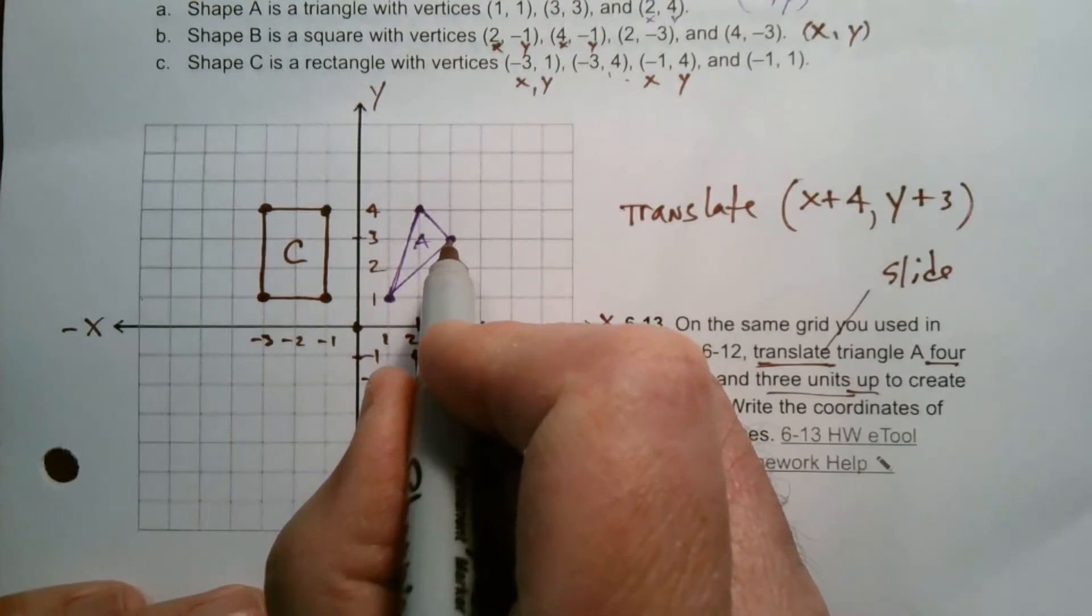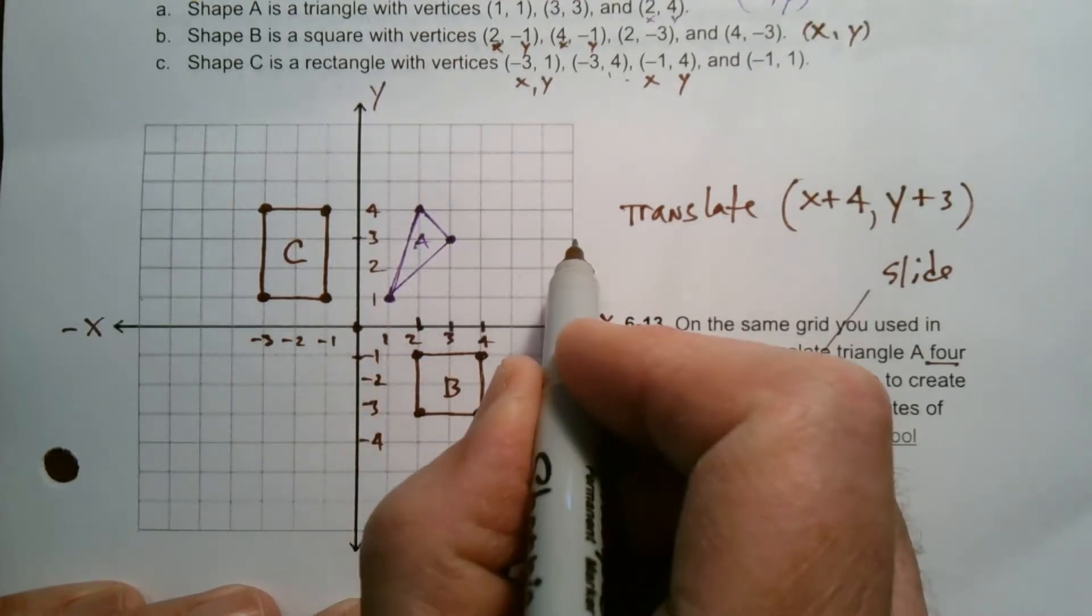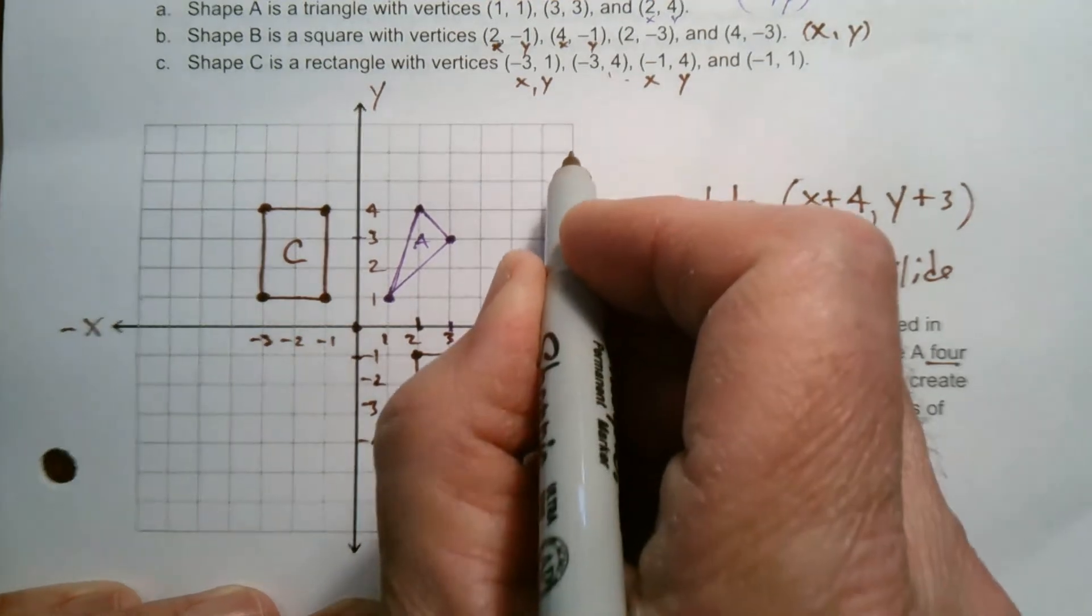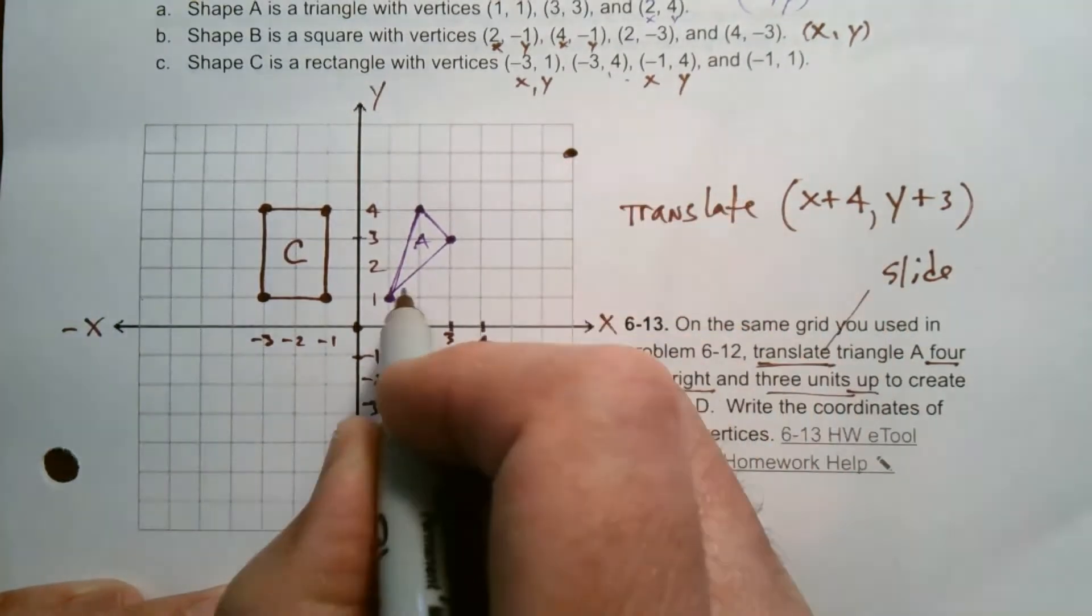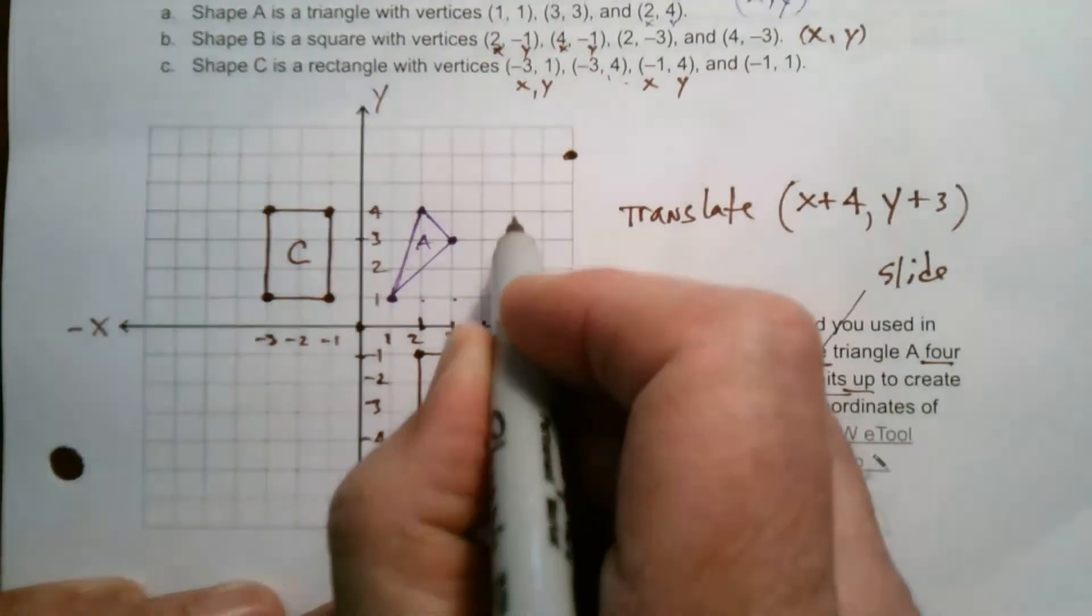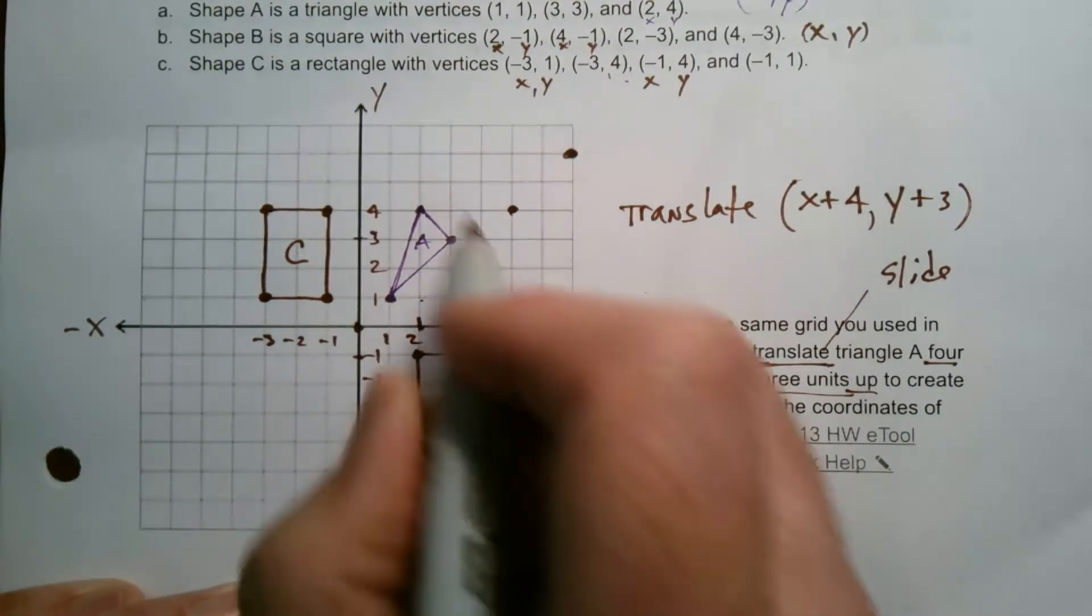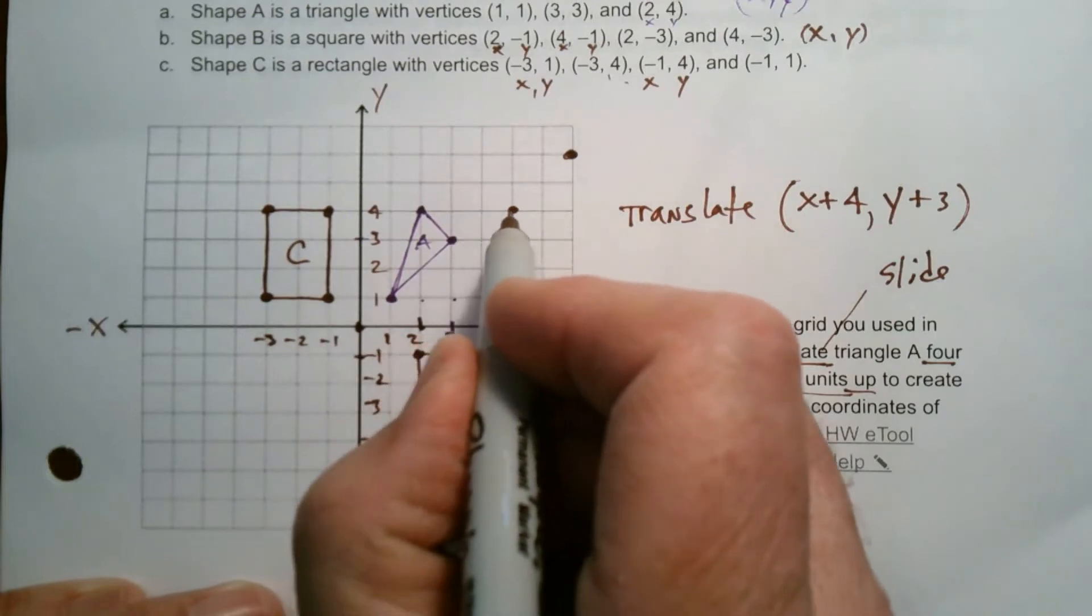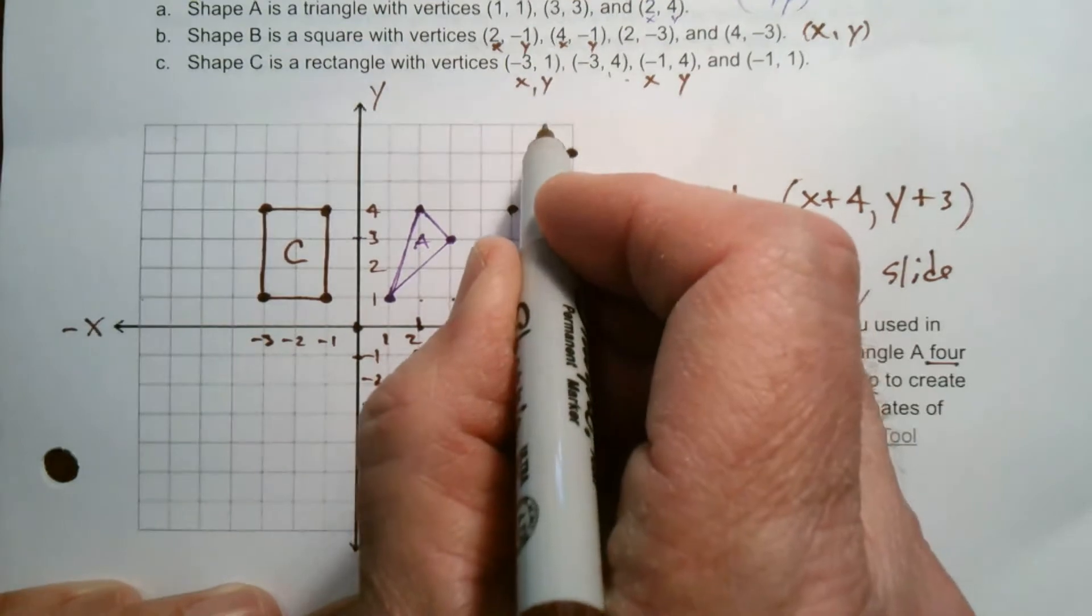So every one of these points, so that point there, I'm going to go over four, one, two, three, four, up one, two, three. So that point there is now here, right? This point going one, two, three, four over one, two, three, up. Now it's there. Okay. That point going one, two, three, excuse me, four over one, two, three, four, over one, two, three, up.